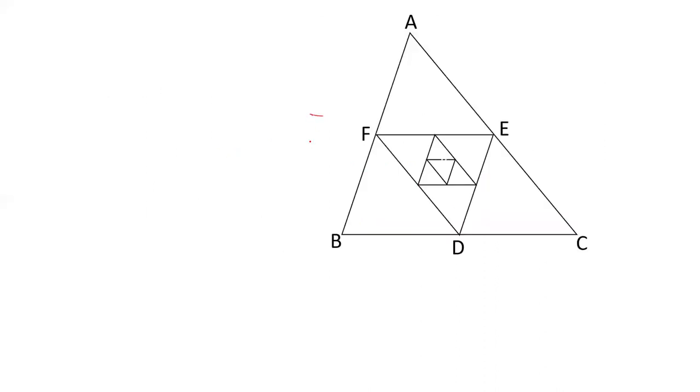This is 7, 8 and 9. So this is a perimeter. 7 plus 8 plus 9 is 24 cm.